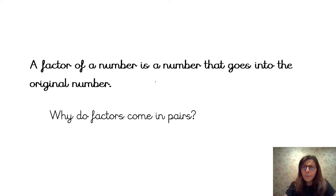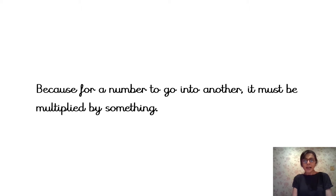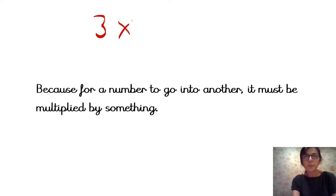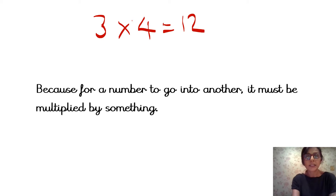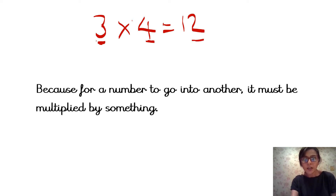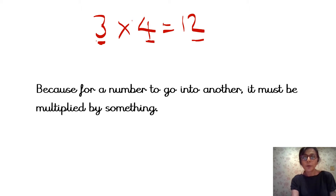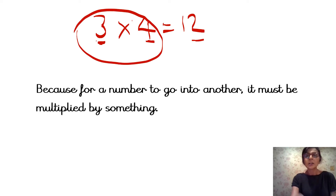A factor of a number is any number that goes into the original number. But factors come in pairs. So why do factors come in pairs? Write that on your whiteboard for me, please. For a number to go into another number, it has to be multiplied by something. So for example, if I had the number 3, the number 3 would be multiplied by 4 to give me 12. Here, 3 and 4 are the factors. So: 3 times 4 equals 12. 3 and 4 are the factors of 12, and 12 is the product. Factor pairs are the pairs of factors we multiply together to get the product. So 3 and 4 is a factor pair to give us 12.